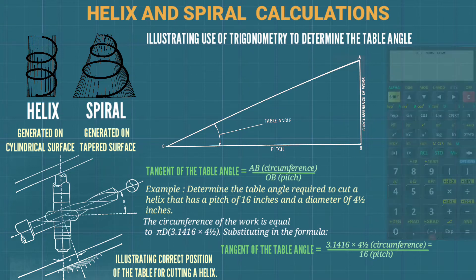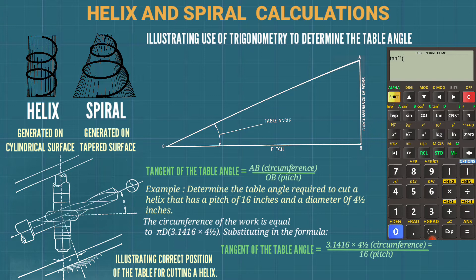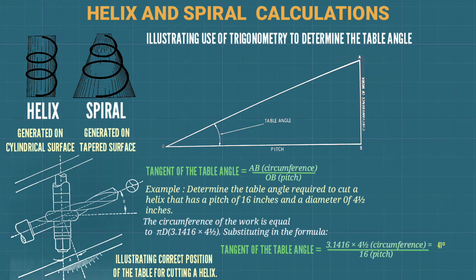Using a calculator: 3.1416 times 4.5 divided by 16 equals 0.8835. Taking the inverse tangent of 0.8835 gives approximately 41 degrees, or 41 degrees and 30 minutes.